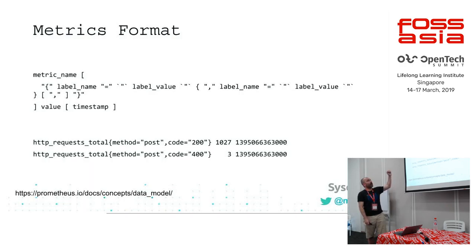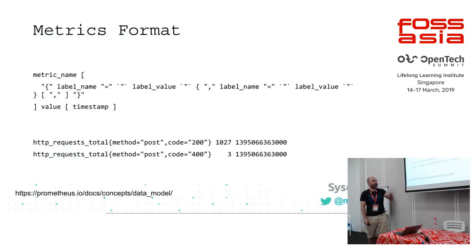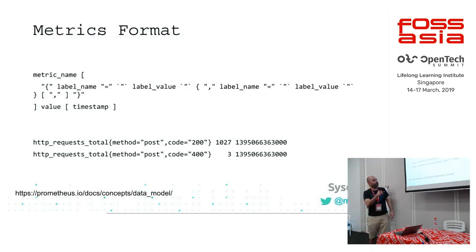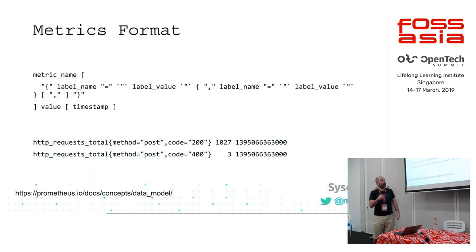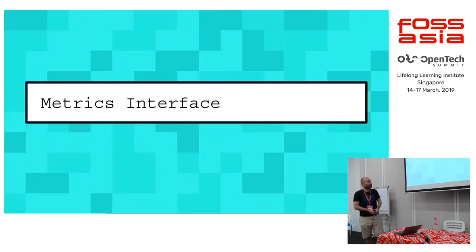The metrics format has a metric name, a series of labels, the value of the metric, and a timestamp. For example, HTTP request total — you can look at posts that were successful or posts where the code is 400. The nice thing is that you can query these labels later using PromQL to only get the information or metrics that you want. You could do `4xx` with a tilde to match a regular expression.